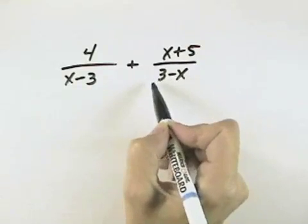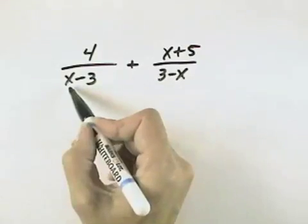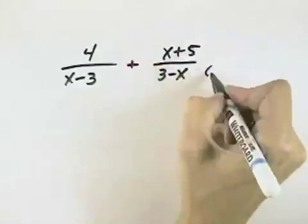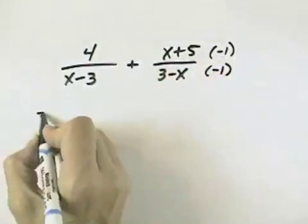What that means is if I multiply by negative 1, these two will reverse and I'll have the same denominator. However, I can't just multiply the denominator by negative 1, so I also multiply the numerator by negative 1.